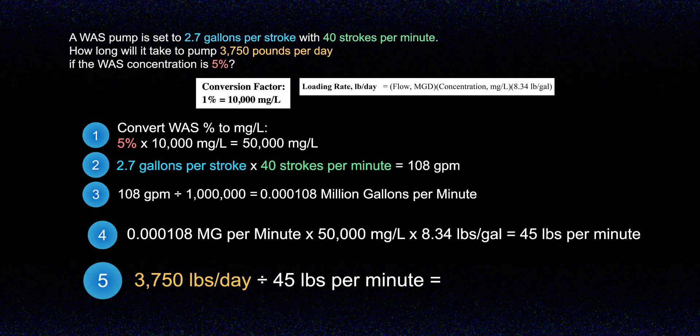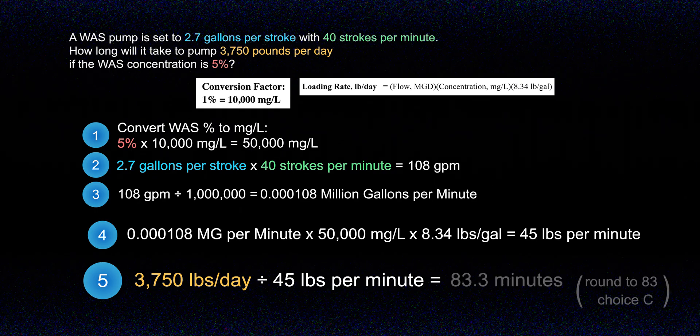In step 5 we bring it all together. Now that we know the amount of solids being pumped per minute, we can figure out how long it will take to pump 3,750 pounds of solids contained in the waste-activated sludge. We simply take the 3,750 pounds per day and divide by the rate of 45 pounds per minute, giving us 83.3 minutes, which rounds down to 83 — choice C.